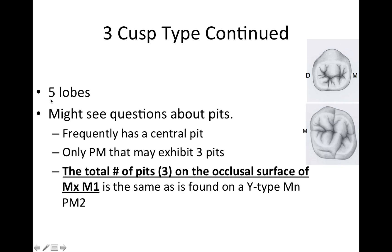The three-cusp type is going to have five lobes. You might see questions about pits too. This tooth frequently has a central pit. It's the only premolar that may exhibit three pits, and the total number of pits on this tooth is the same as on the maxillary first molar. So if they ask which tooth has the same number of pits as the maxillary first molar, the answer is the three-cusp type mandibular second premolar.